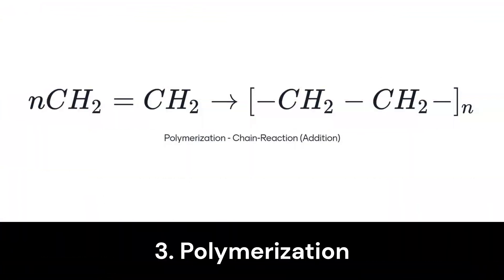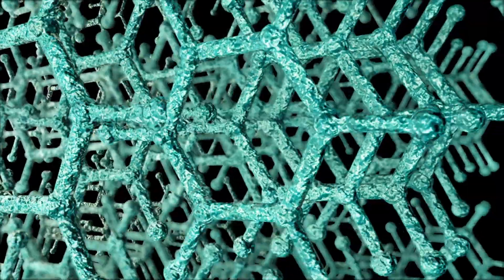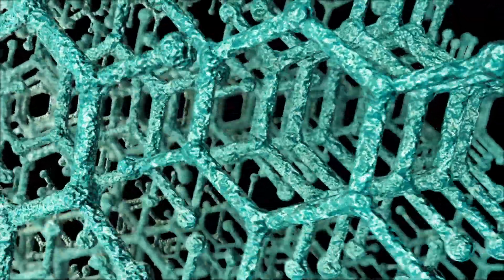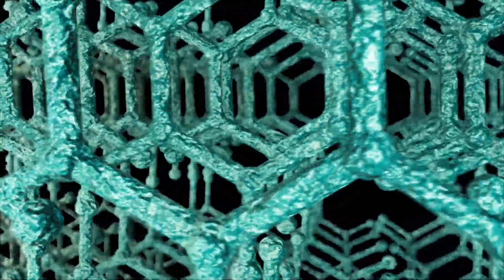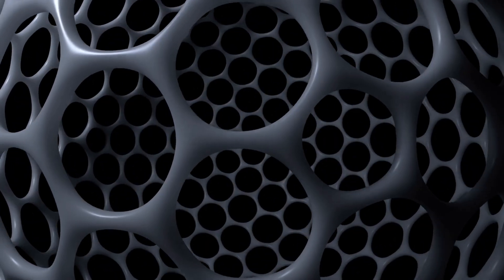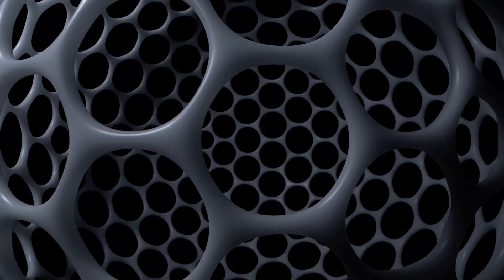The polymerization of plastics, a series of diverse reactions, redefined materials engineering. In the mid-1800s to early 1900s, scientists discovered how to create giant polymer chains, like polyethylene, with repeating monomer units. These plastics have revolutionized our modern world, becoming indispensable in everything from packaging to electronics.